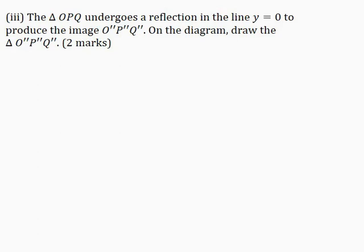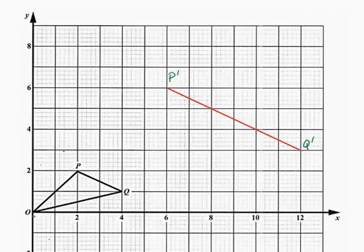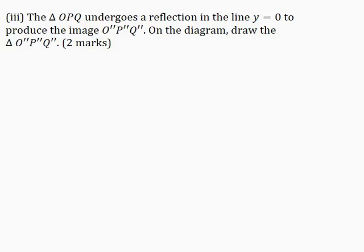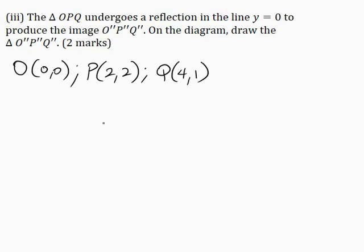Part 3: The triangle OPQ undergoes a reflection in the line y = 0 to produce the image O'P'Q'. On the diagram, draw the triangle O'P'Q' for 2 marks. From our diagram here, O is located at (0, 0), P is located at (2, 2), and Q is located at (4, 1). I'll record these coordinates first.